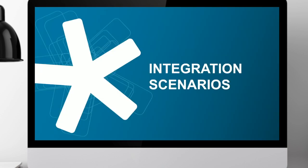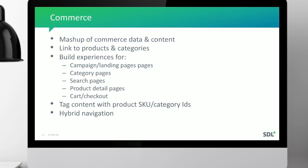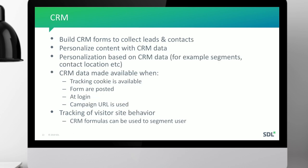Here are a few integration scenarios where connectors can be used. For commerce, you can mash up commerce data and content in Tridion, take references to products and categories, build pages, and publish to the delivery side. You can link to product categories to generate product detail pages, build experiences for campaign pages and category pages, and tag content with product SKUs and do hybrid navigation.